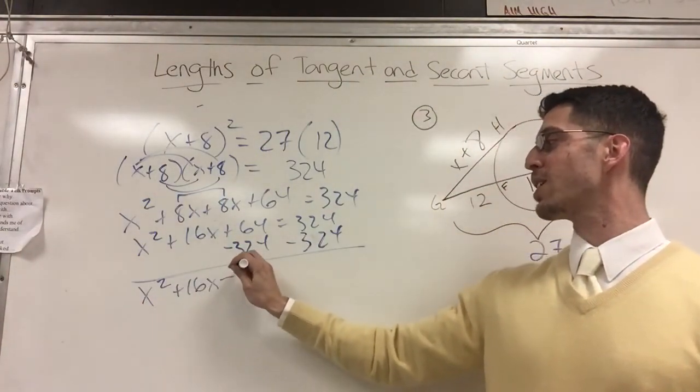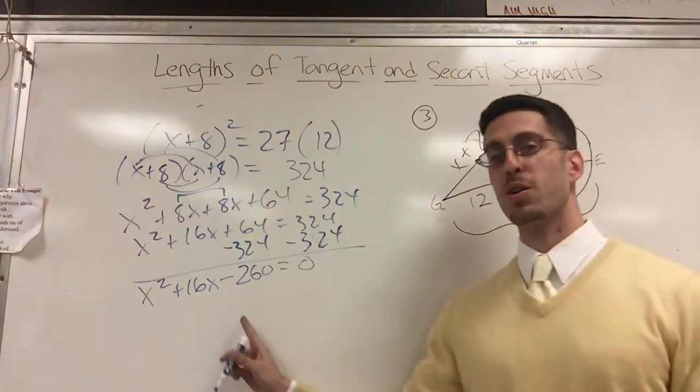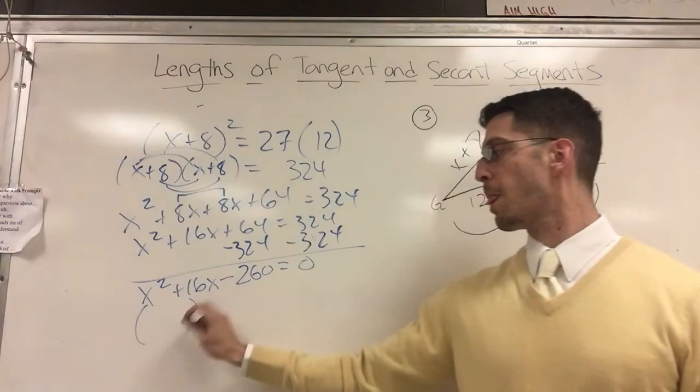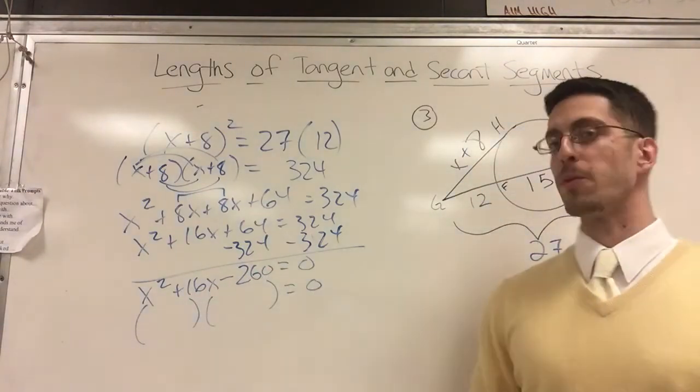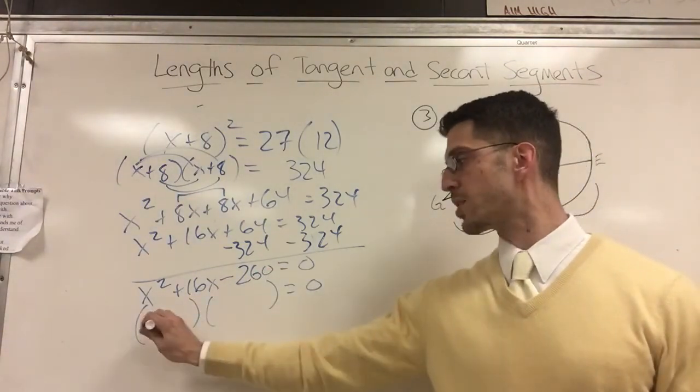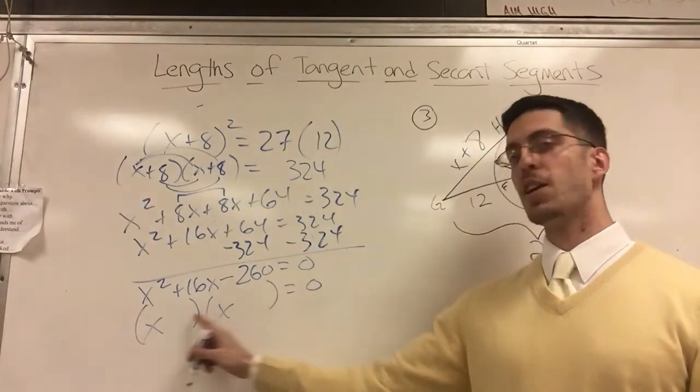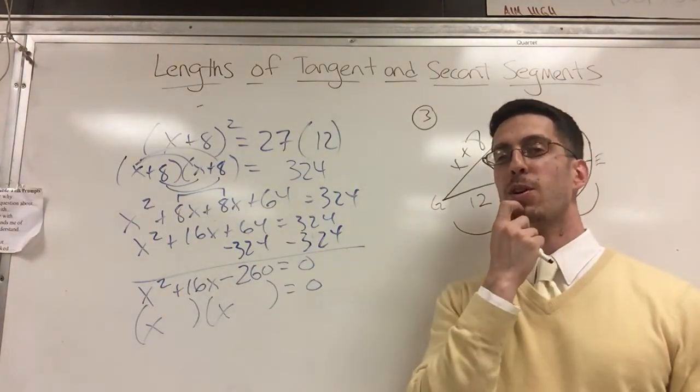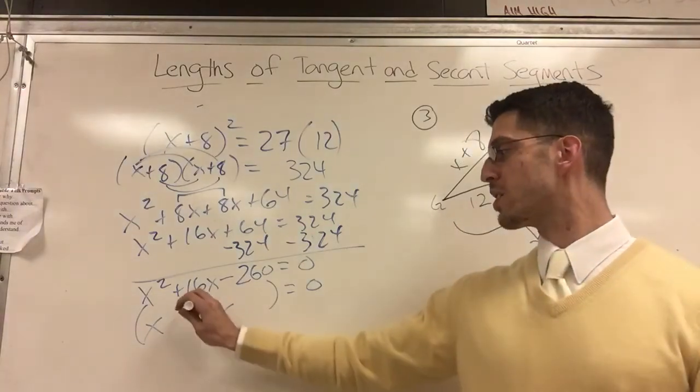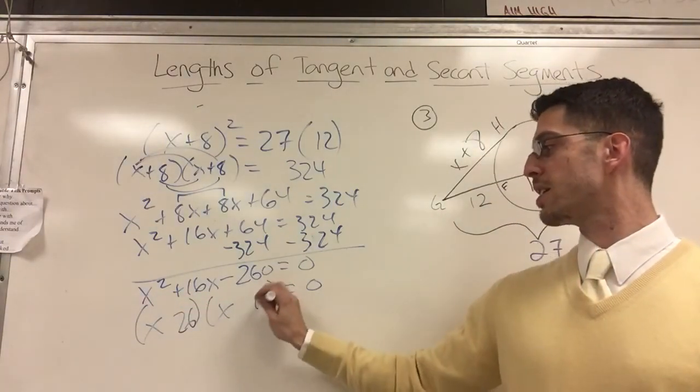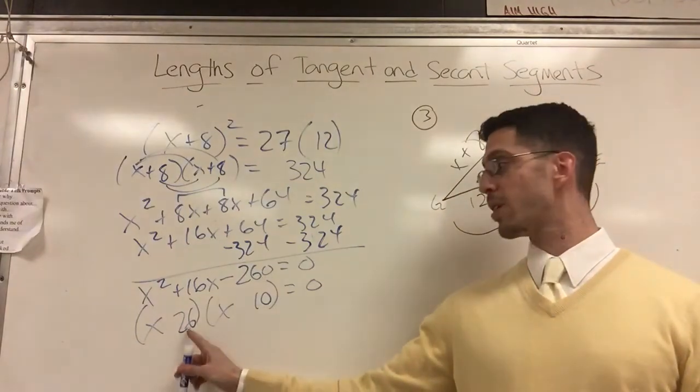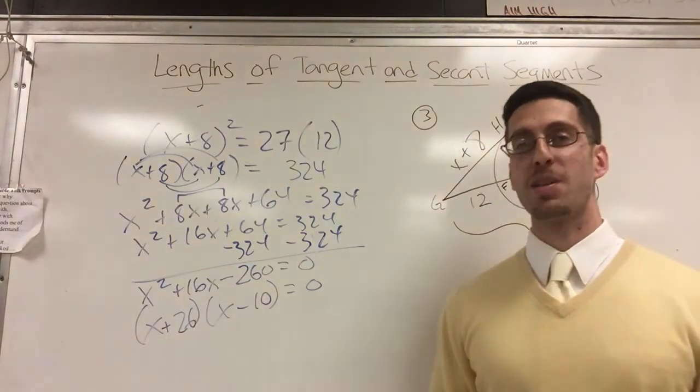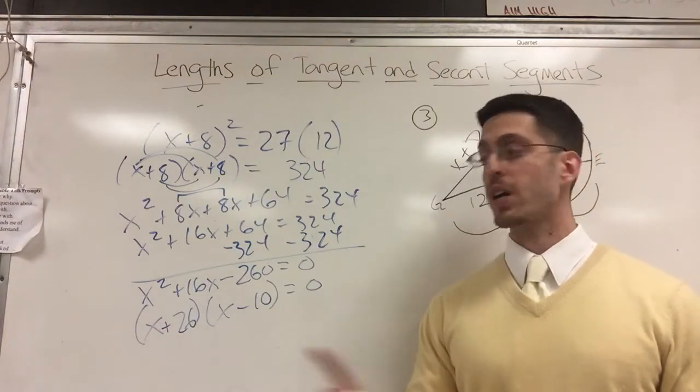Now you gotta factor. I know an x and an x go here. I need numbers that multiply to 260 and add to 16. I'm going to go with 26 and 10, and the bigger number gets the middle sign so that it's a plus and that is a minus.